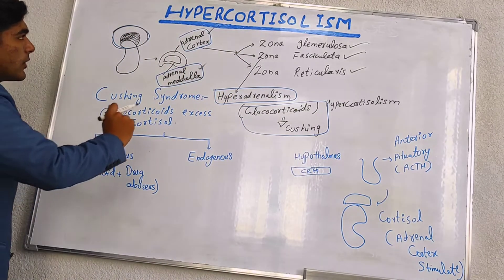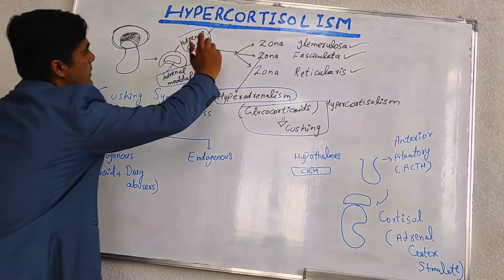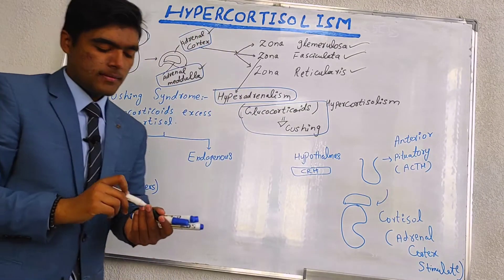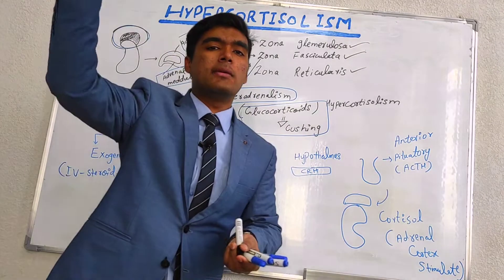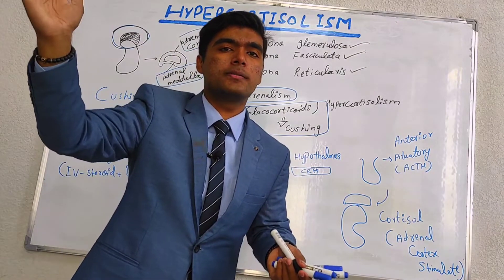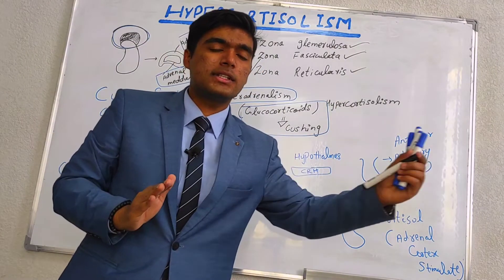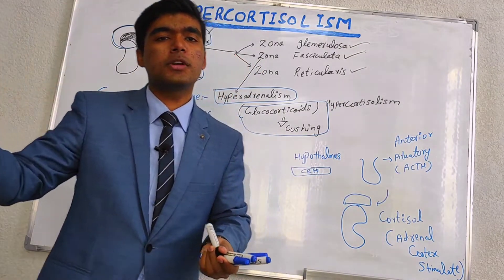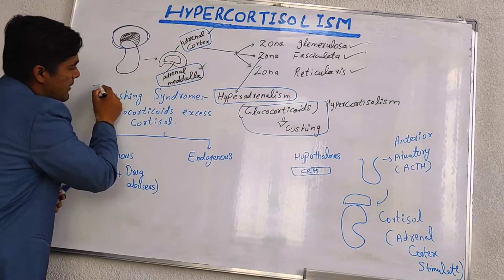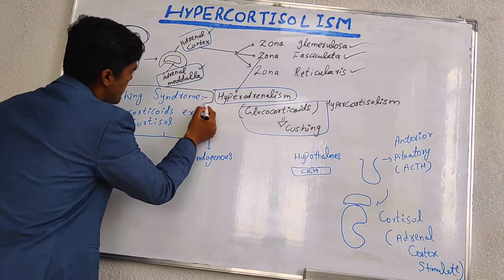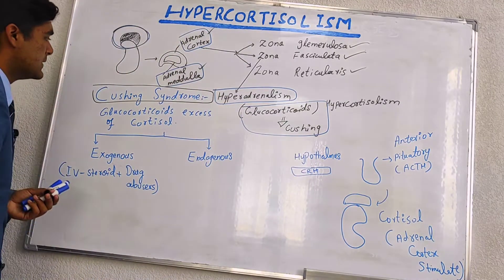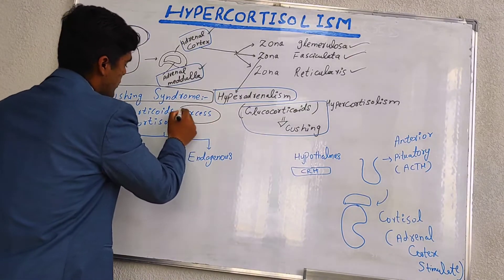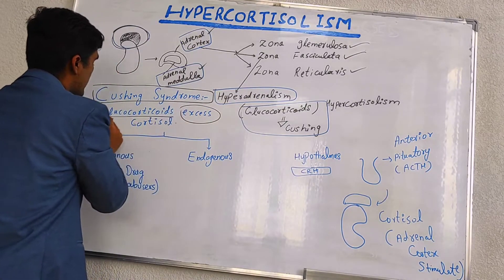Whenever we talk about hypercortisolism, it is basically an excess of cortisol level in our body. Its synonym terminology refers to Cushing syndrome or Cushing disease, which both essentially mean excess of cortisol in the body.